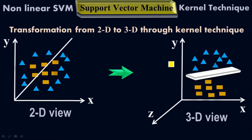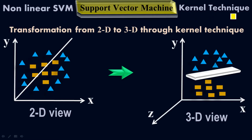In the 2D view, the data is mixed — there is no linearity, it is in a non-linear form. So by applying the non-linear support vector machine, which is actually the kernel trick, I changed this data into 3D form, giving us x, y, z — a three-dimension form.